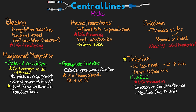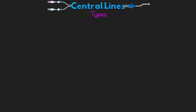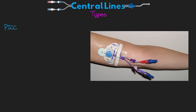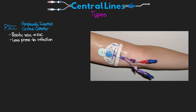When it comes to central lines, we actually have many different types. The first is the PICC, or peripherally inserted central catheter. This is inserted into the basilic vein usually in the arm, and then the catheter tip works its way all the way up and terminates in the SVC. These are less prone to infection, but that risk is still present.